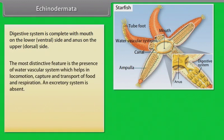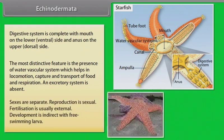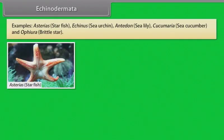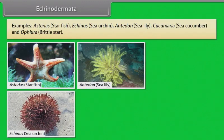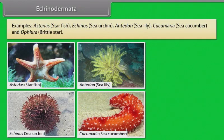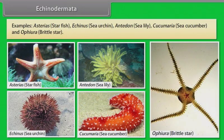The most distinctive feature is the presence of the water vascular system, which helps in locomotion, capture and transport of food, and respiration. An excretory system is absent. Sexes are separate; reproduction is sexual. Fertilization is usually external. Development is indirect with a free-swimming larva. Examples: Asterias (starfish), Echinus (sea urchin), Antedon (sea lily), Cucumaria (sea cucumber), Ophiura (brittle star).